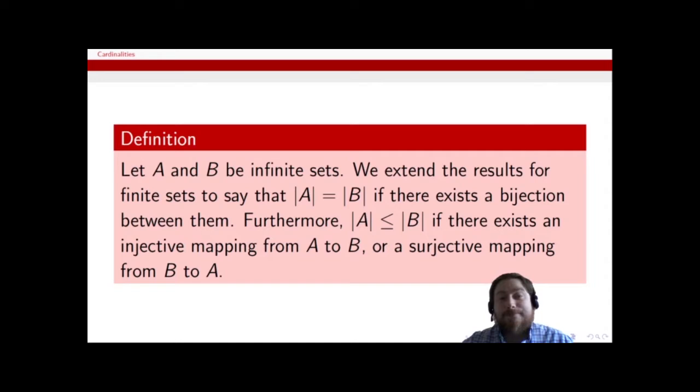Also, we can say that the cardinality of A is less than or equal to B if there's an injective mapping from A to B, or if I can find a surjective mapping from B to A. So I can use the same results: if it's one-to-one, then the domain is smaller than the codomain; if it's onto, then the codomain is smaller than the domain. And so we can talk about different sizes of infinity — different cardinalities of infinite sets.